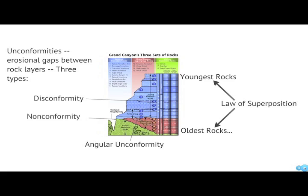We start out with unconformities. Unconformities are places where the rock is actually missing — places where between two layers of rock, you had a period of erosion. There are three types of unconformities.